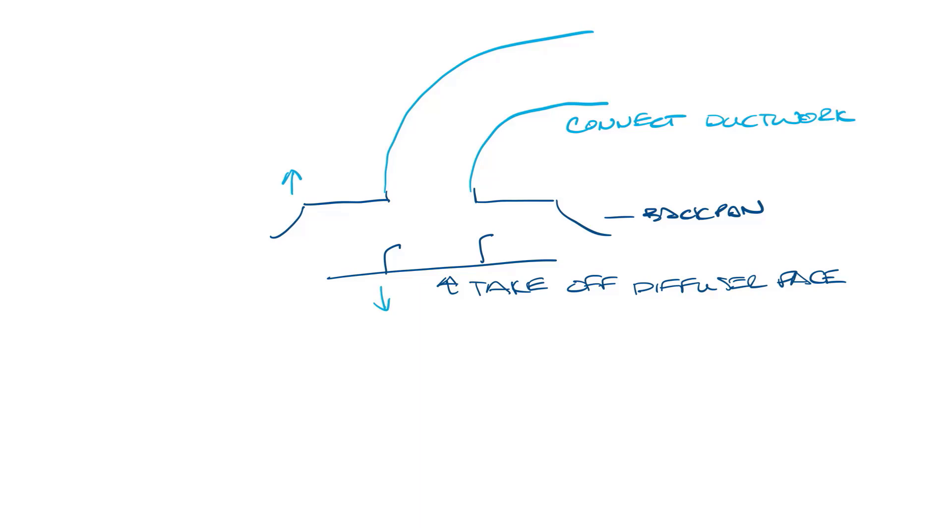So let's slide this out of the way and look at what you need to do to install the diffuser. So let's draw a diffuser first. This is the backpan of the diffuser and this is the face. First of all you want to take the face off the diffuser and then you want to connect the ductwork. Then you want to put the diffuser up in the ceiling so that the edge of the diffuser backpan is flush with the sheetrock.